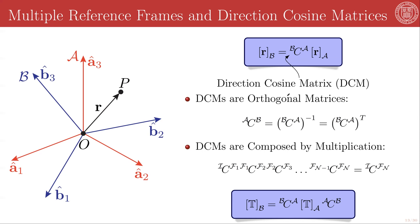Direction cosine matrices are elements of what is known as SO3, a special orthogonal group in three dimensions. That means that they are orthogonal matrices, which means that the inverse of BCA — which is the opposite rotation, called ACB in our notation by flipping the order of the superscripts — is the same as the transpose of that matrix. So the inverse operation is the transpose of the matrix.